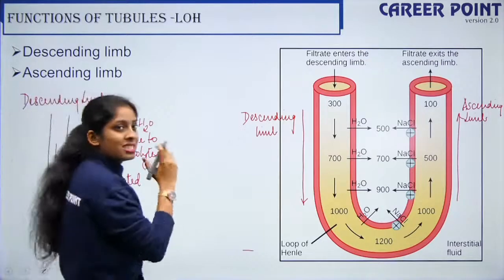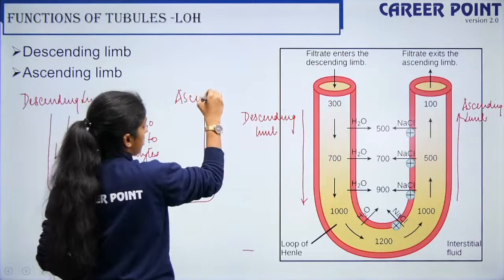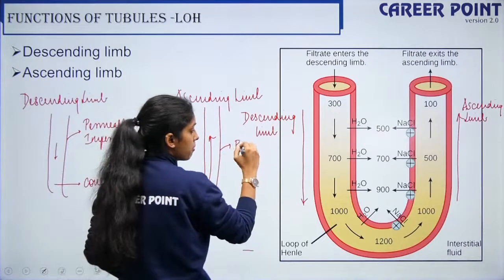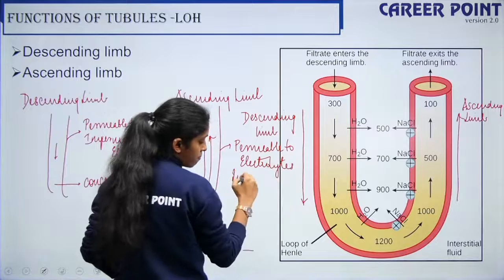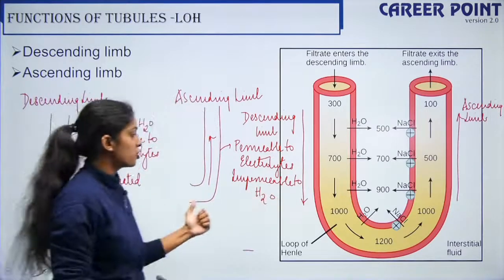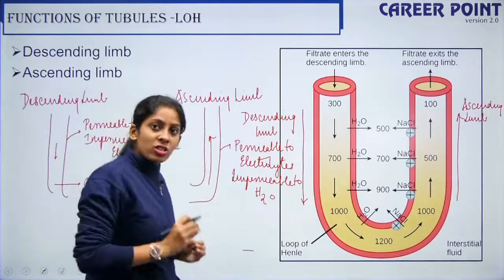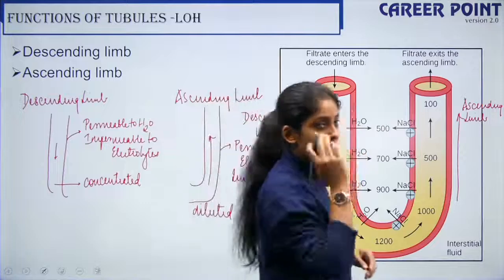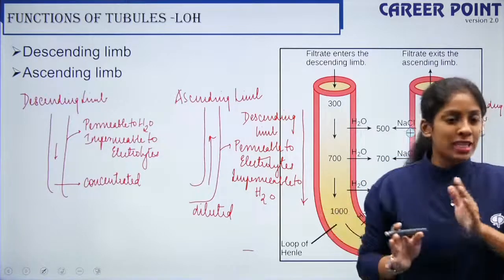The ascending limb of the loop of Henley is exactly opposite to the descending limb. The ascending limb is permeable to electrolytes and impermeable to water. The concentrated filtrate moves up, electrolytes move out through the wall, and the remaining water is left inside, so the filtrate becomes diluted. So after the descending limb the filtrate is concentrated, and after the ascending limb it becomes diluted.